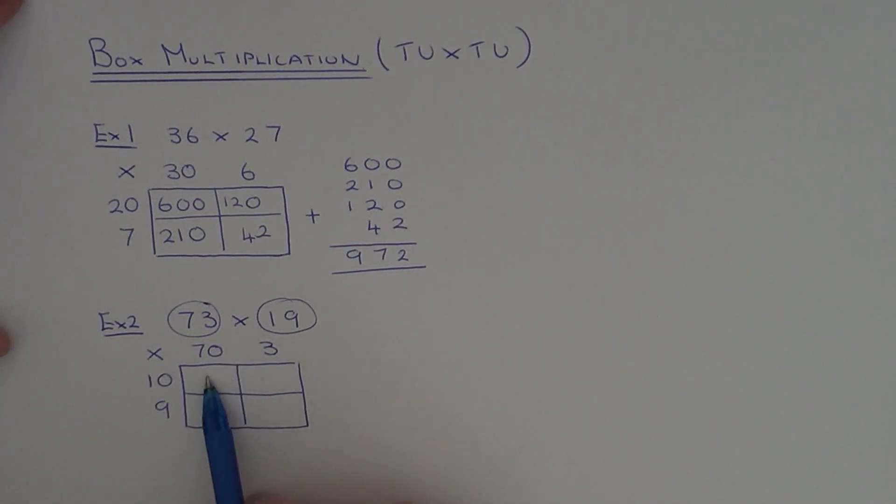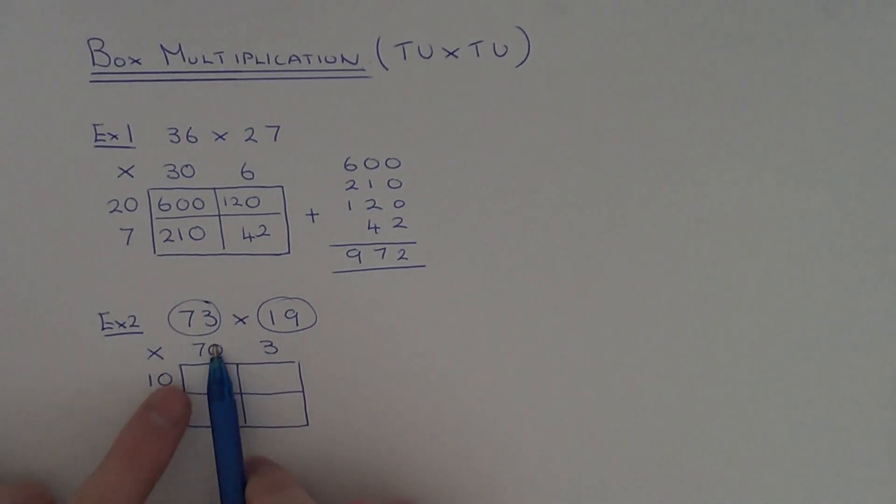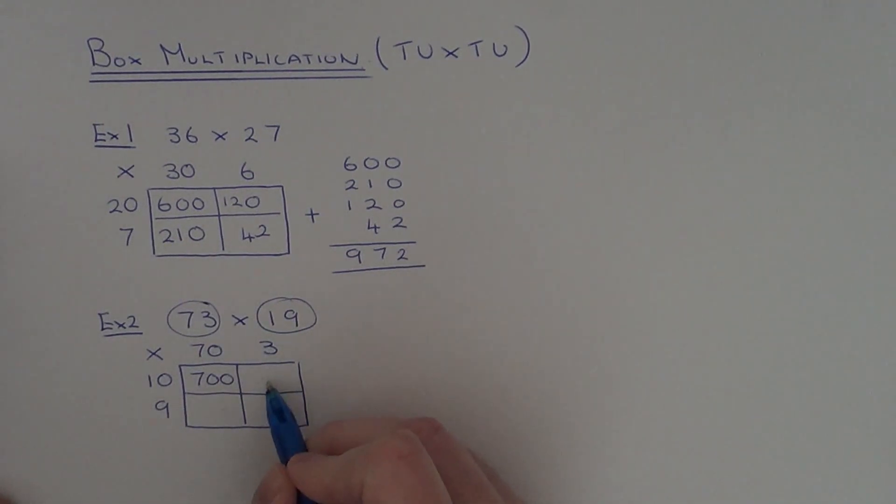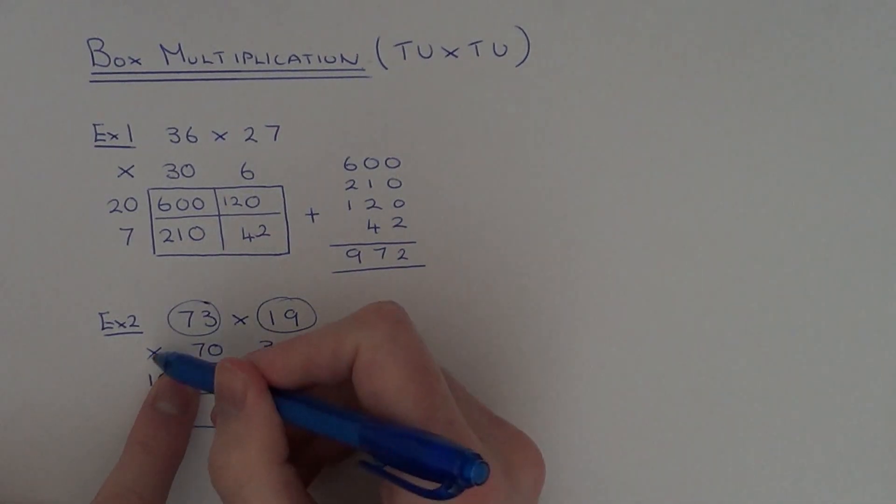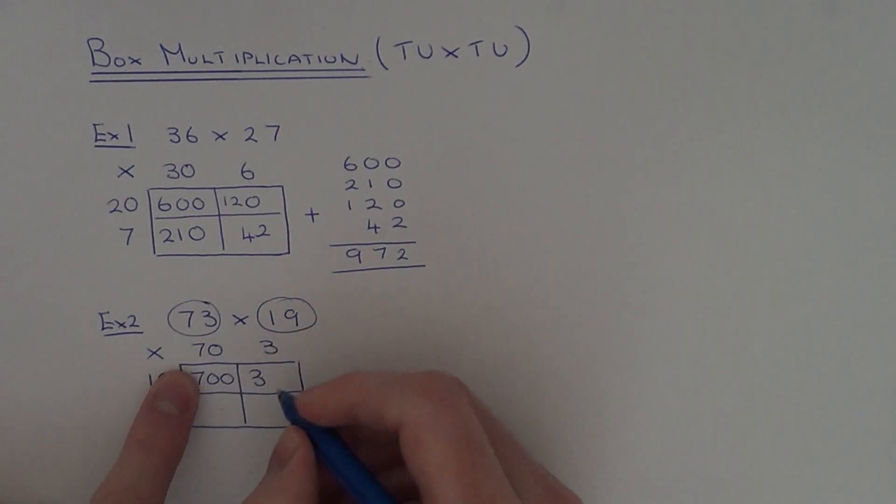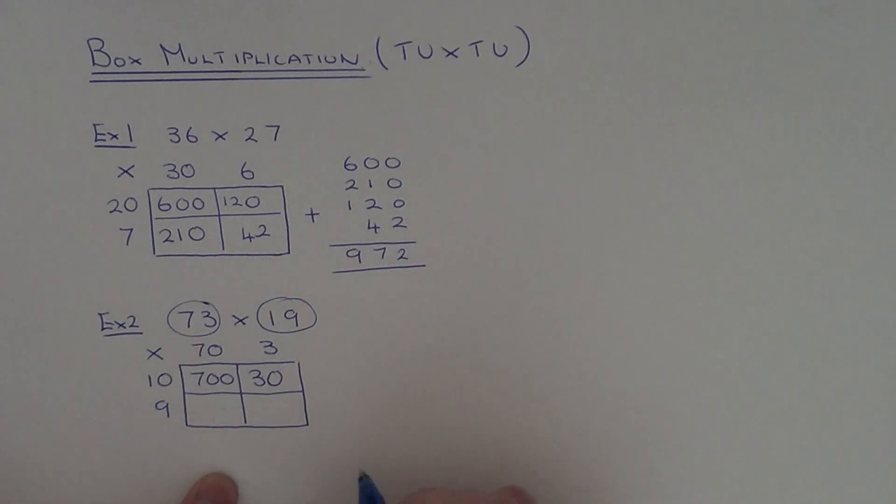So again let's do this one. So we've got to do 70 times 10. Ignore your zeros. Just do 7 times 1. 7 times 1 is 7. I've covered up two zeros so add the zeros back on. The next one here we've got to do 3 times 10. I'm just going to ignore the zero so you won't get confused on how many zeros you're adding on. So I'm just going to do 3 times 1 is 3 and then add the zero back on.